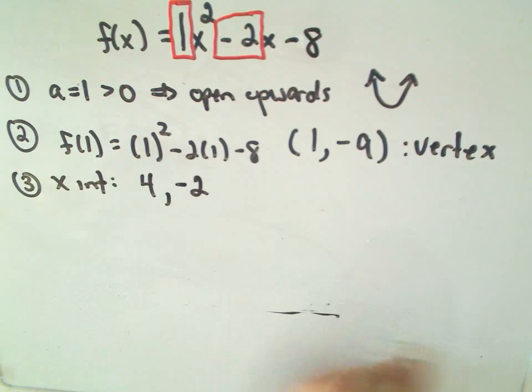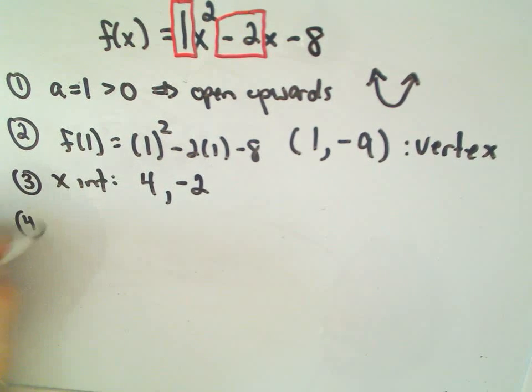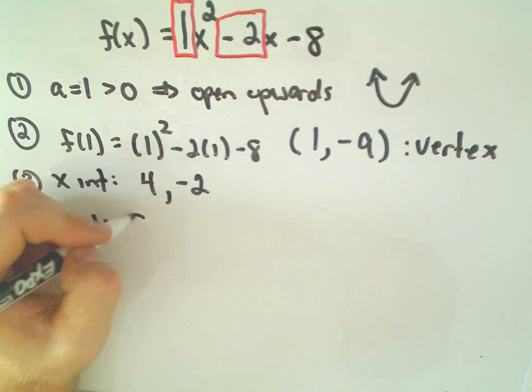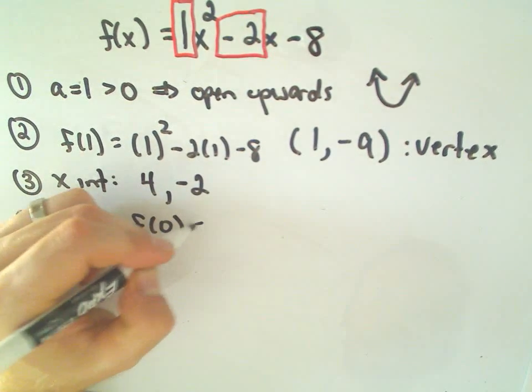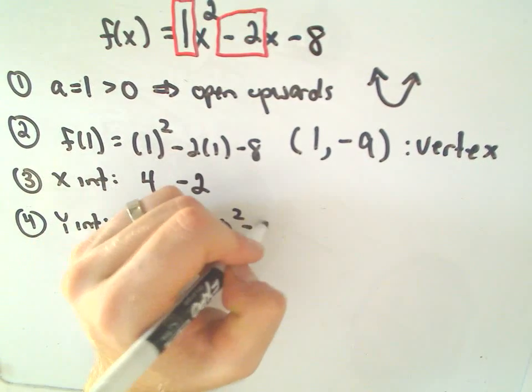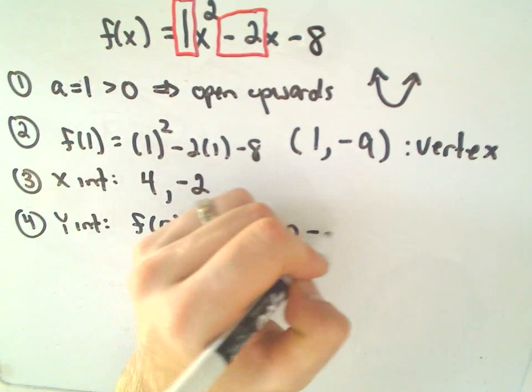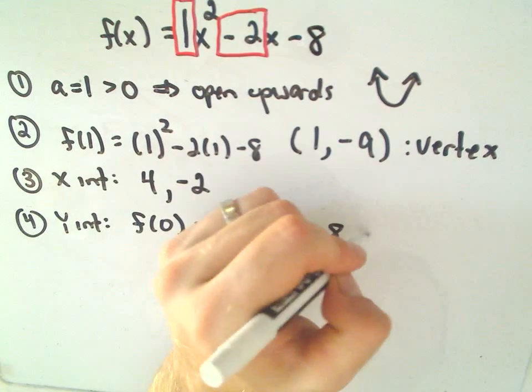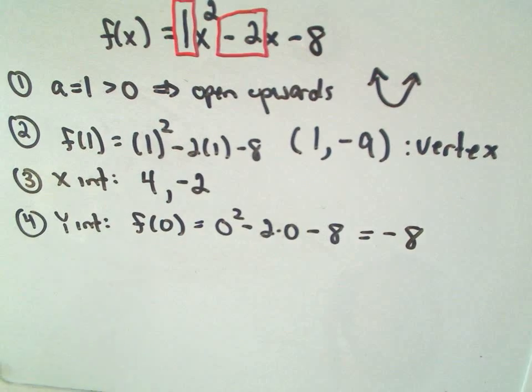And the last thing is simply to get the y-intercept. That's pretty easy to do. To get the y-intercept, we just let x equal 0. So if we plug in 0 for x, we'll get 0² - 2(0) - 8. And that looks like the value negative 8.